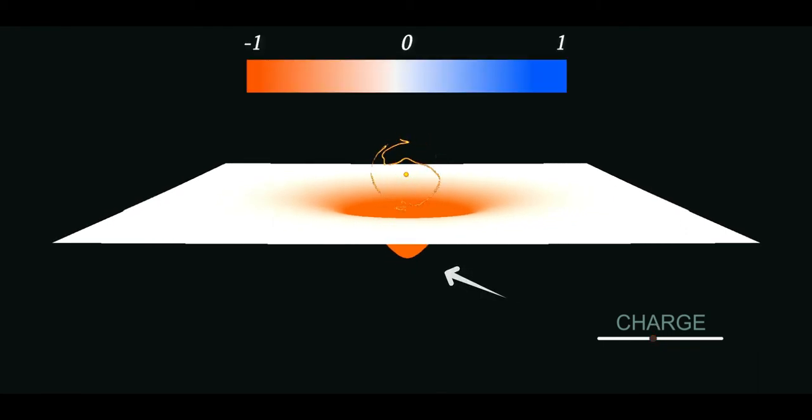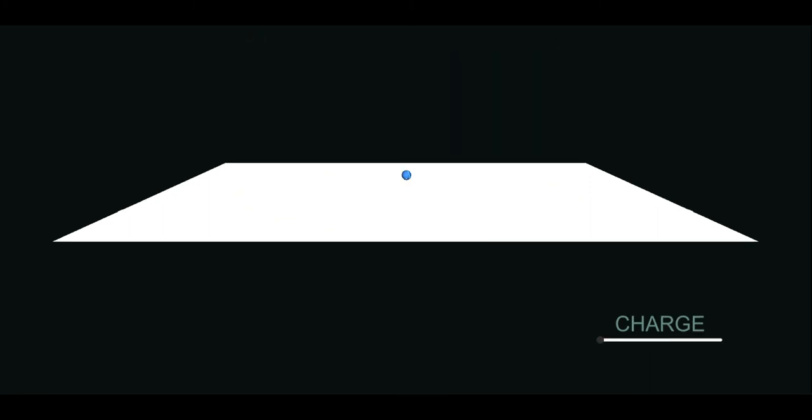The color and the curvature of the sheet let you better understand the strength of the field. If instead of a negative particle you use a proton or a positron characterized by a positive charge, then the paper bends upward.